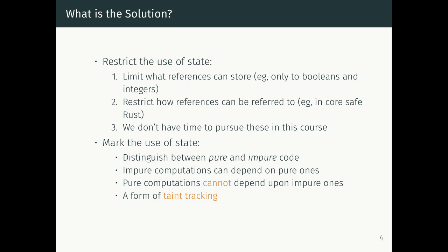Instead, what we're going to look at is marking the use of state so we always know when we're in pure or impure code. Pure code is programs which don't use state; impure ones do. If something is pure, you know it won't use state and no one could have implemented backpatching in the pure fragment. If you use an impure computation, your whole computation becomes impure — this is taint tracking.